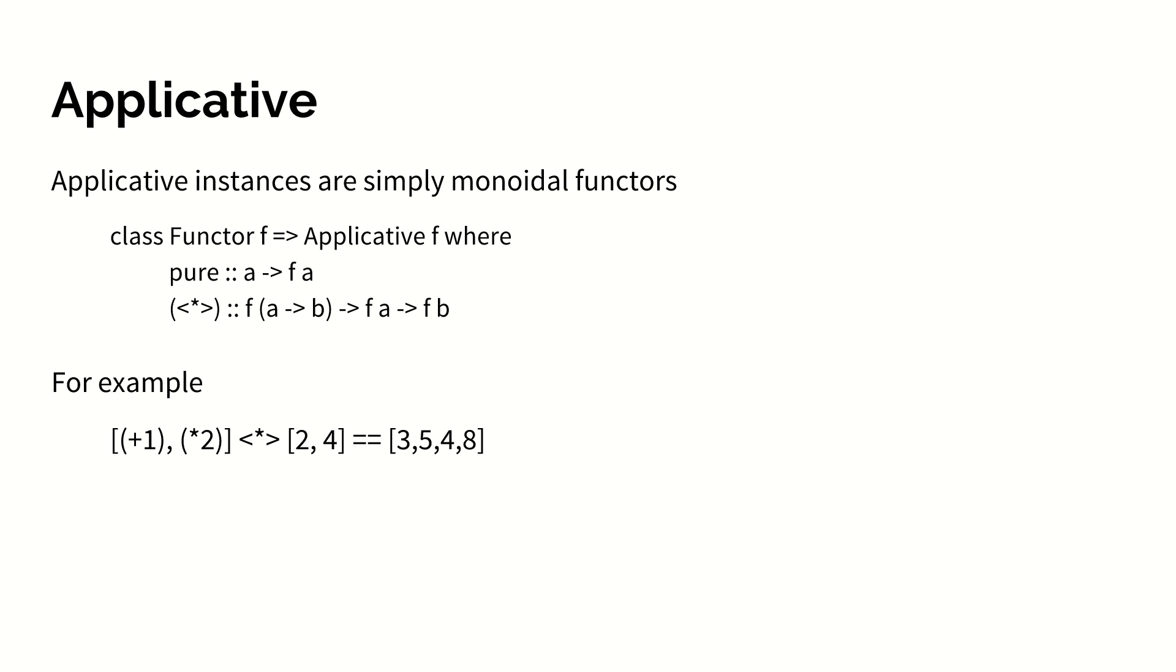For something to be applicative simply means that it is a true functor, but also has two more operations: pure and this operator with the less than, star, greater than sign, otherwise known as app or applicative apply. Pure is just a function that takes a value a and returns that value contained in the applicative structure.